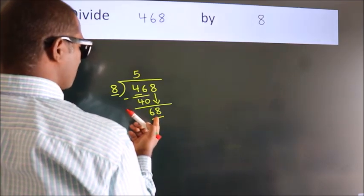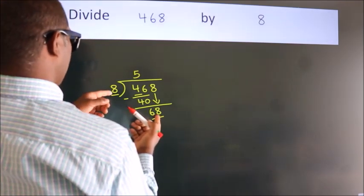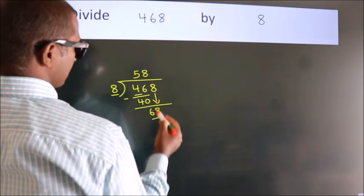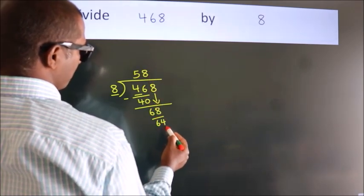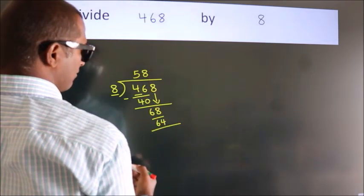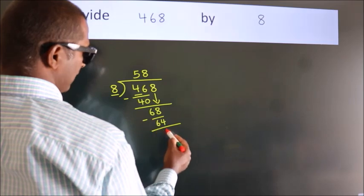A number close to 68 in the 8 table is 8 eights 64. Now we subtract, we get 4.